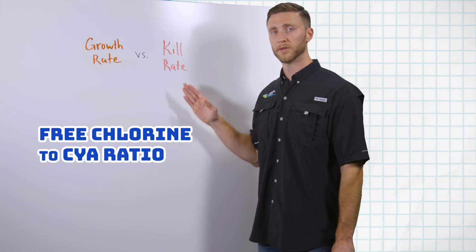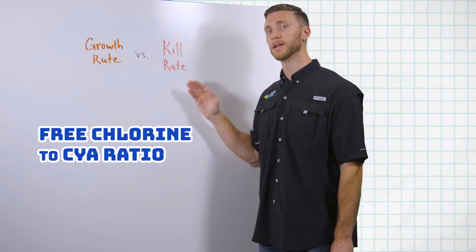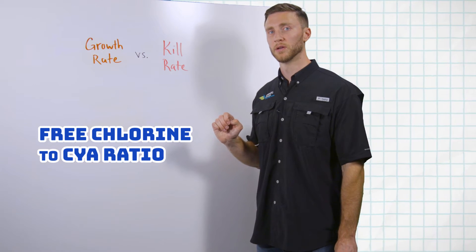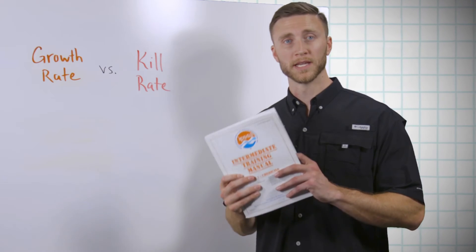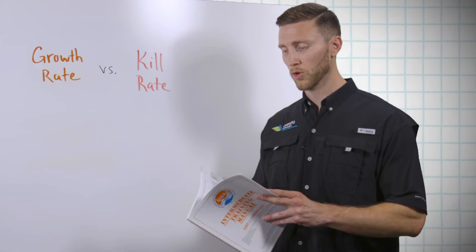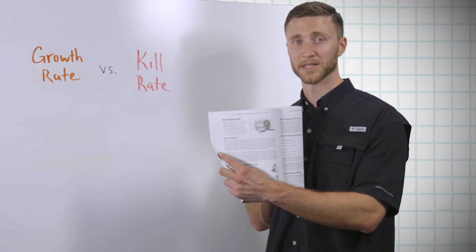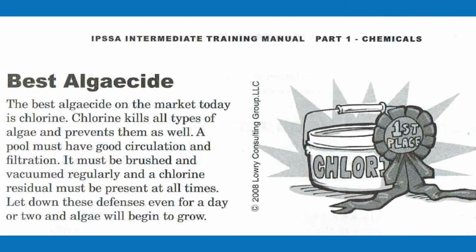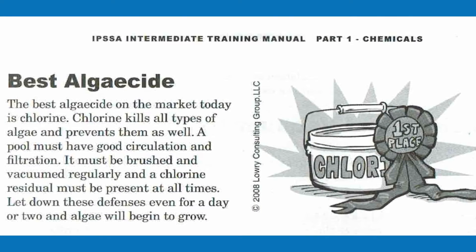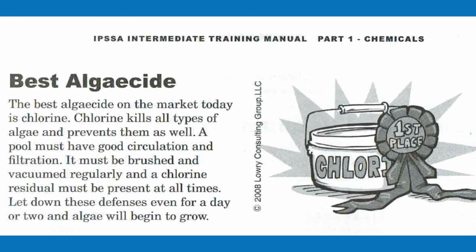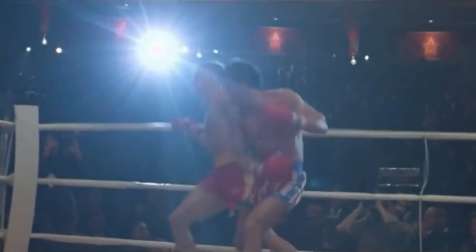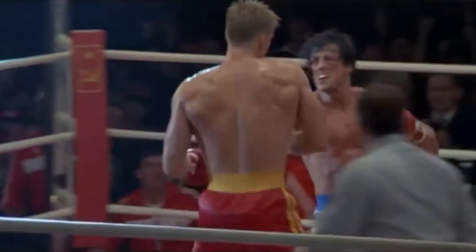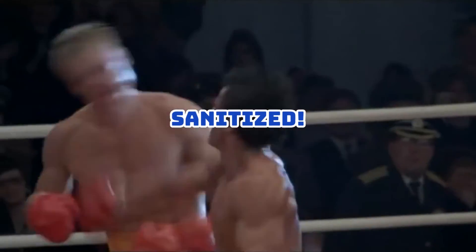What really matters is the free chlorine to cyanuric acid ratio. According to the textbooks in this industry, chlorine is the best algaecide. You just have to give it a chance, because if it's too overwhelmed by the growth rate of these things and all the other stuff it has to deal with, that's when you get an outbreak.